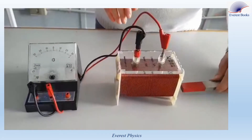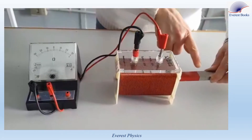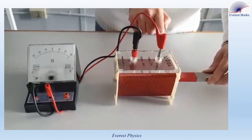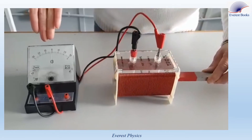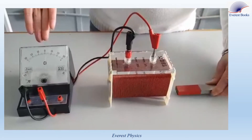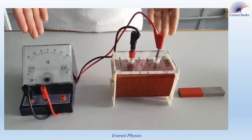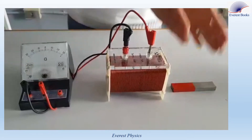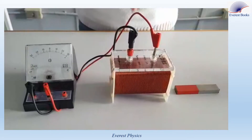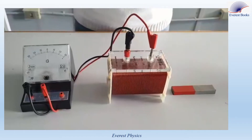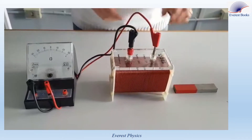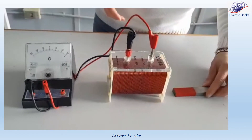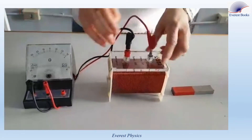When both the magnet and the coil are at rest, the needle is not deflected. So a current is induced in the circuit only if the magnet moves relative to the coil or the coil moves relative to the magnet. Now, we move the magnet and the coil in a straight path.